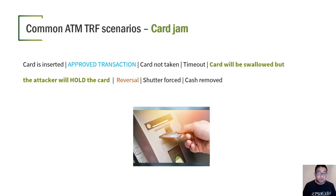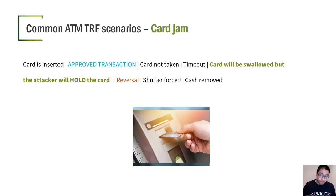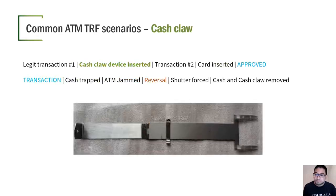The card jam attack: the card is inserted, a normal transaction is done, but when the card is ejected, it is not taken. A timeout occurs and the card should be swallowed, but instead of letting the card reader swallow the card, the attacker holds the card. That causes a reversal, and then the shutter is forced, the money is grabbed, and the cash is removed.